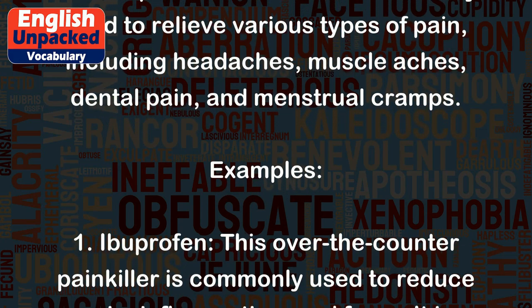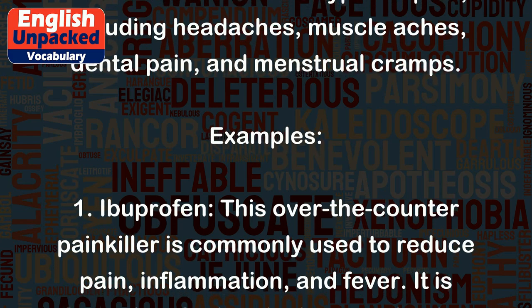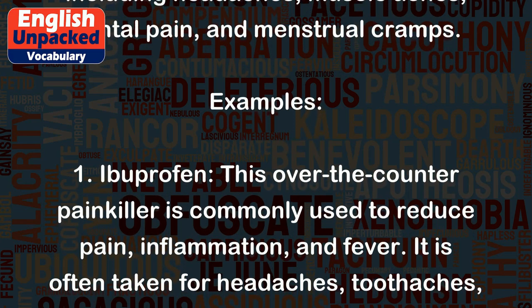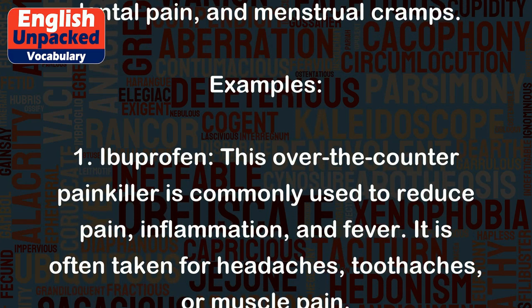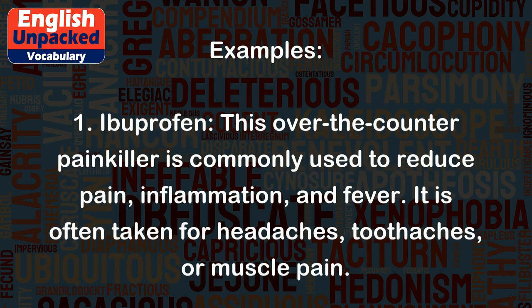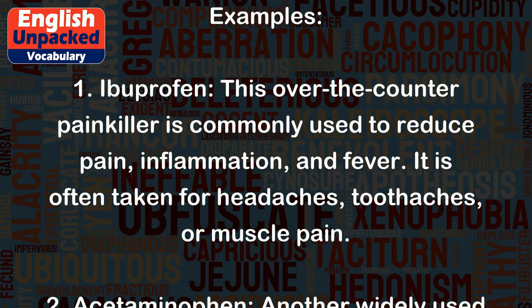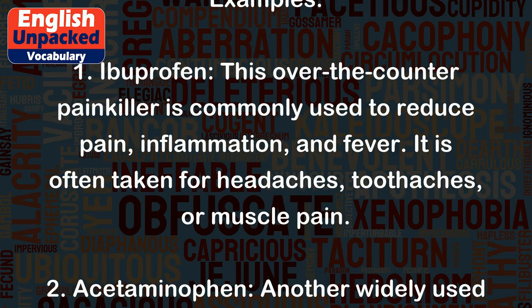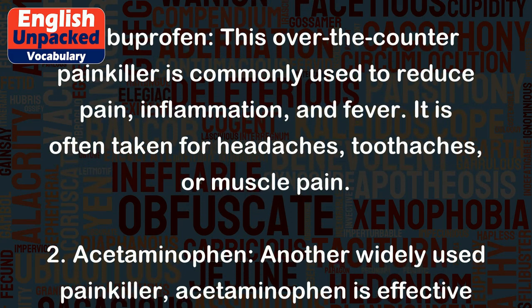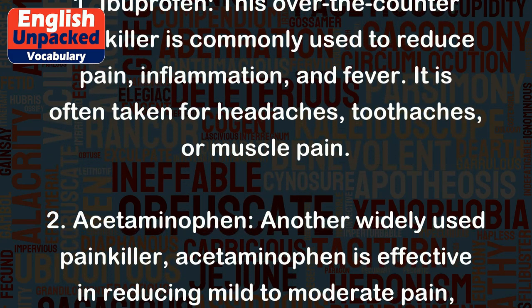Examples. 1. Ibuprofen — this over-the-counter painkiller is commonly used to reduce pain, inflammation, and fever. It is often taken for headaches, toothaches, or muscle pain.